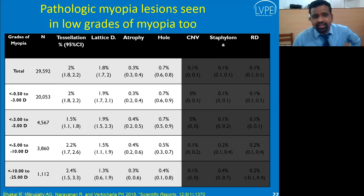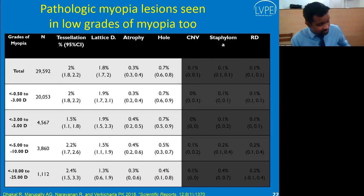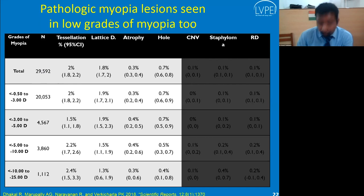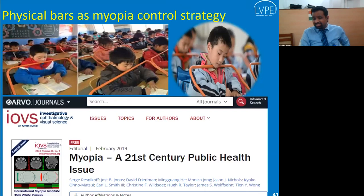An important myth to dispel: ocular complications don't occur only in high myopia. Evidence from 29,000 myopes shows that even mild cases of myopia can have ocular complications. Careful examination and implementing anti-myopia strategies early is therefore critical for all myopes, not just those with high prescriptions.